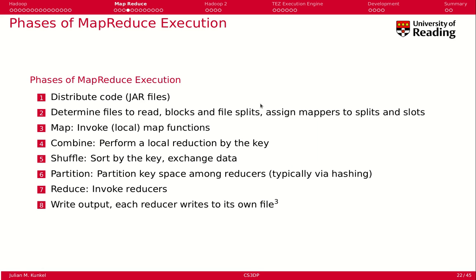How is this executed? There are different phases of the MapReduce execution. First, you have to distribute the code across many task trackers. The job tracker distributes our MapReduce program among all those task trackers that have to execute it. Next, it figures out which files to read, depending on the file blocks and file splits. Then we assign one mapper to each split and slot, and invoke the map function on the data being read.